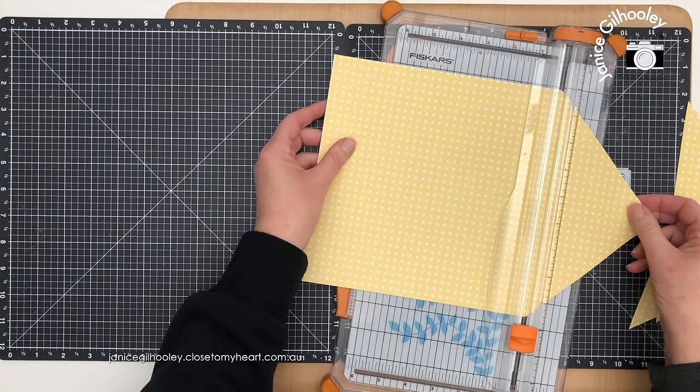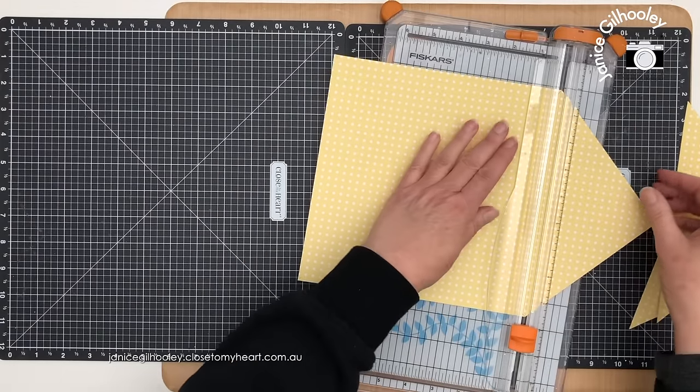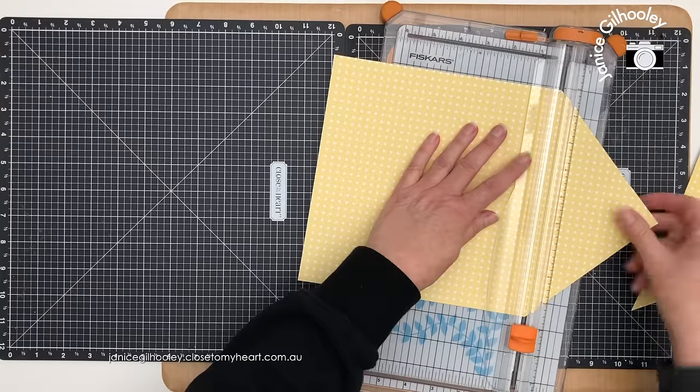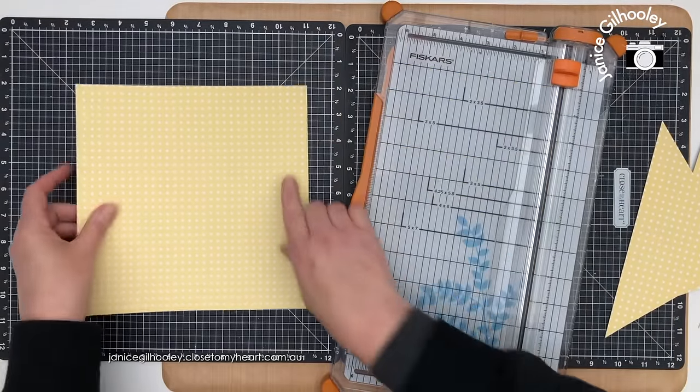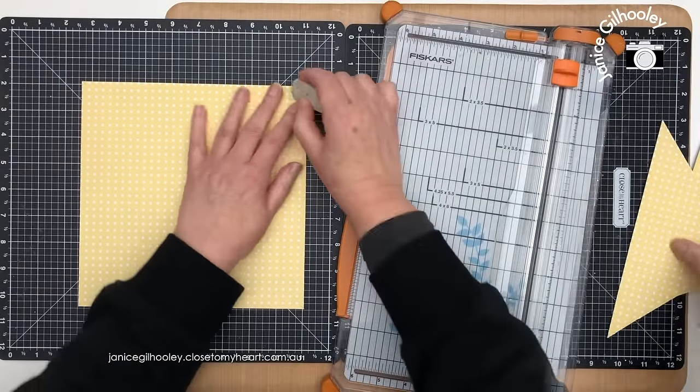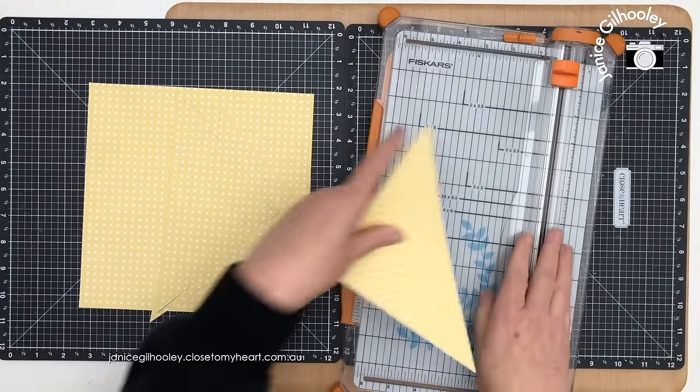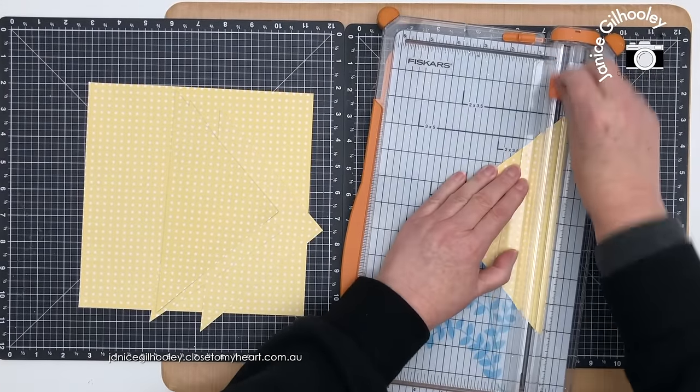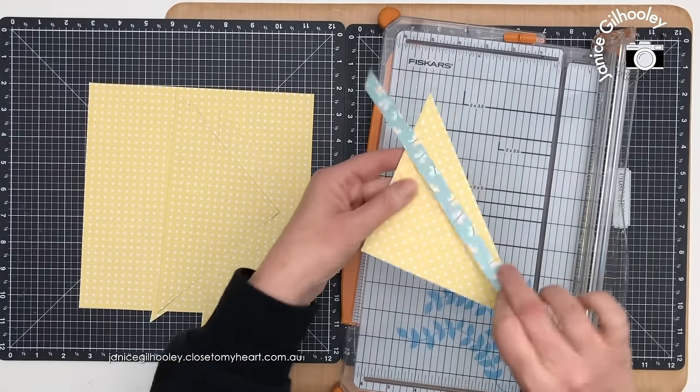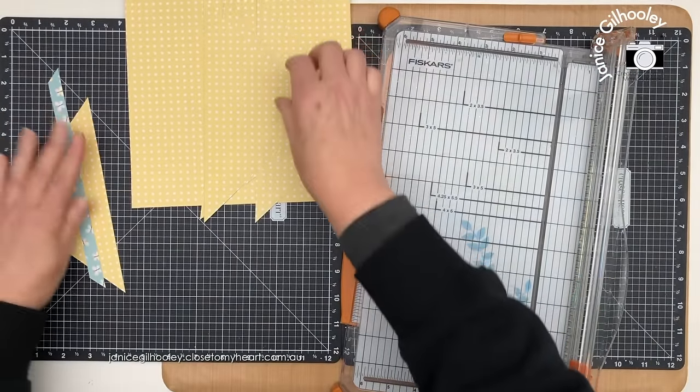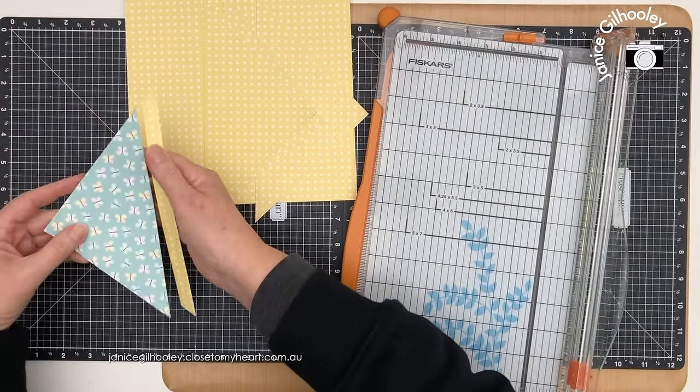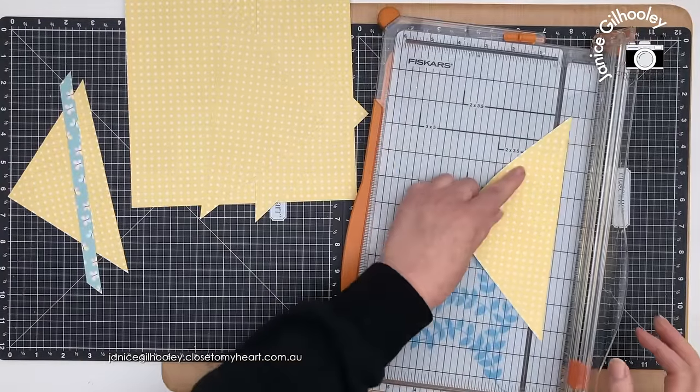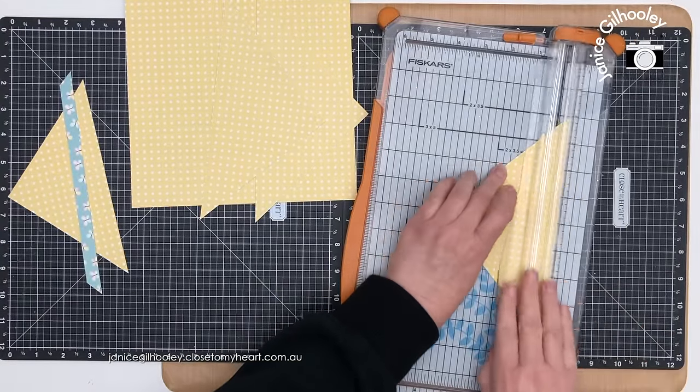This one looks a little bit funny but it's going to work out to be exactly the same size as the other ones. I'm going to take each of these triangles and cut half an inch off the edge so I can flip this over and use the other side which is the butterflies. I think I'm going to have the yellow dots as the main triangle piece and use the butterflies as the trim.